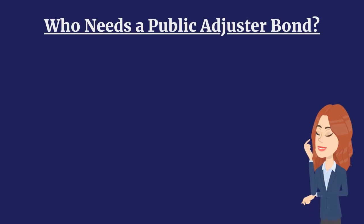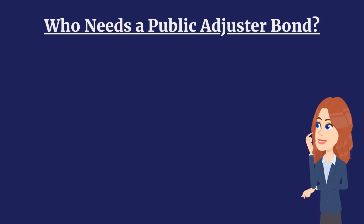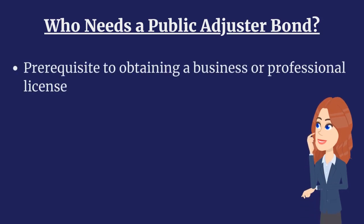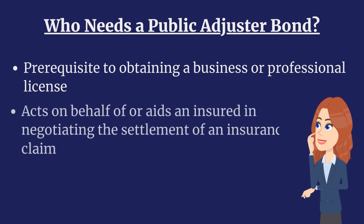Public Adjusters must purchase a surety bond as a prerequisite to obtaining a business or professional license. A Public Adjuster is generally defined as an individual or business that acts on behalf of an insured in negotiating the settlement of an insurance claim.